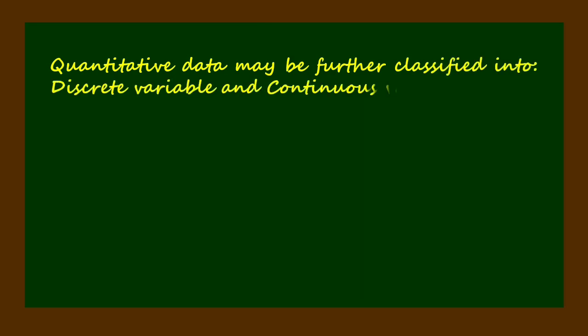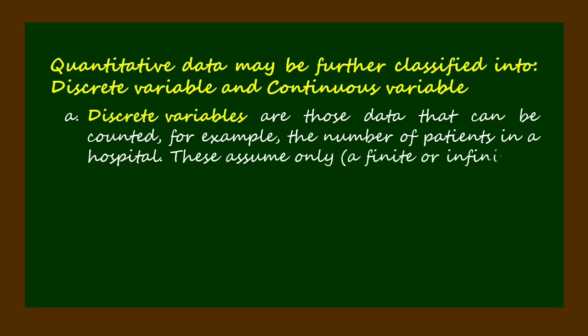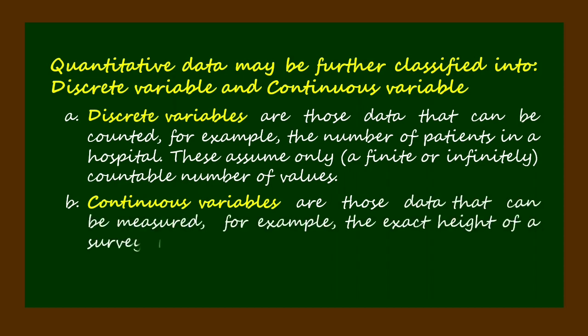Quantitative data may be further classified into discrete variable and continuous variable. Discrete variables are those data that can be counted, for example the number of patients in a hospital. These assume only a finite or infinitely countable number of values.